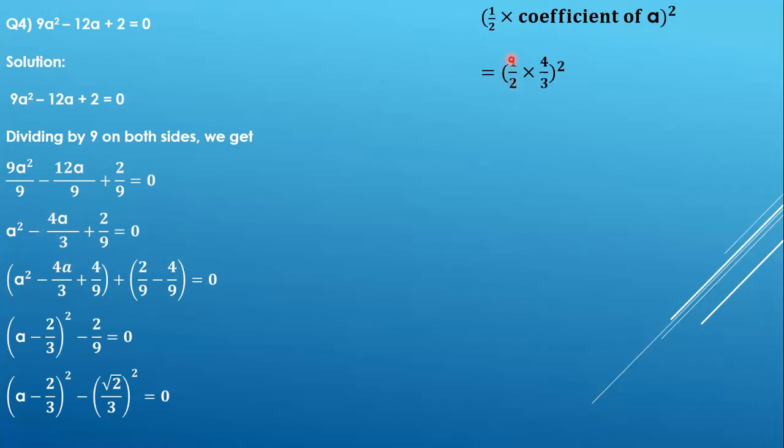Half of the coefficient of a is half times 4/3, which gives us 2/3 because 2 will cancel with 4. Then (2/3)² gives us 4/9.